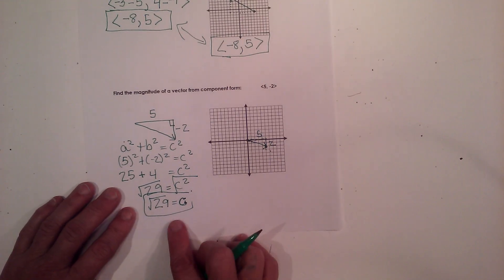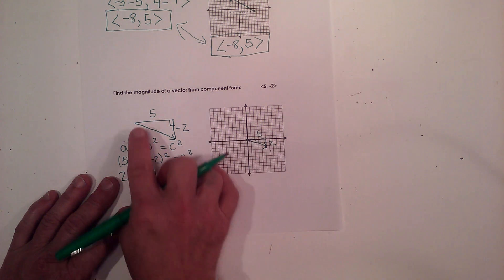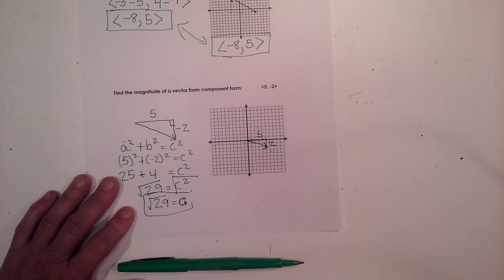And that's how you find the magnitude of a vector from component form. You just find its length. Hope this video was helpful.